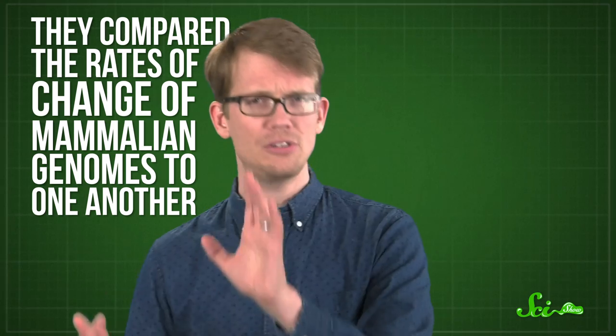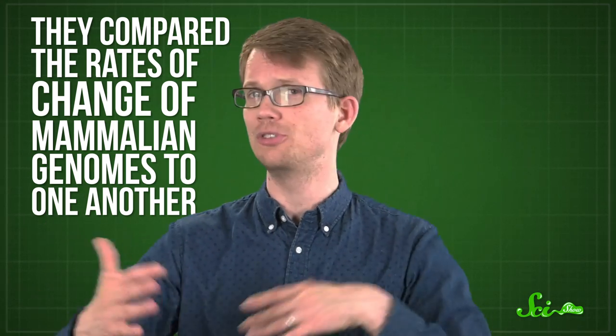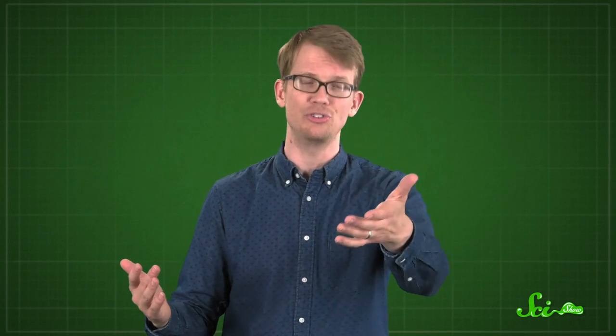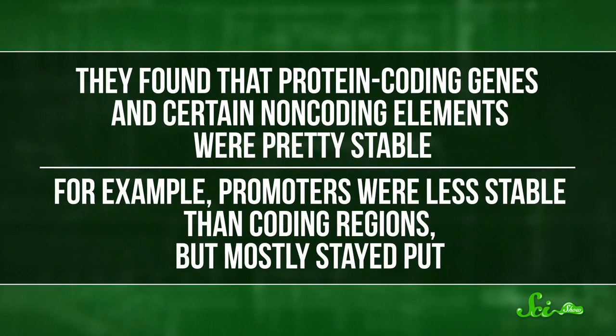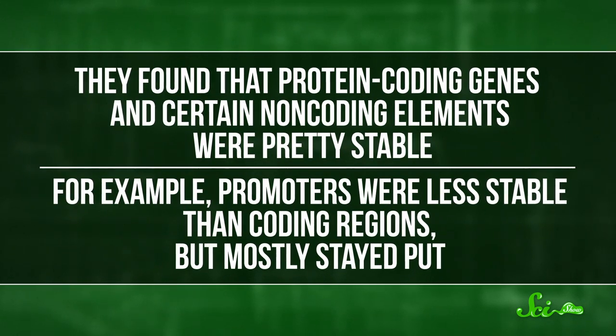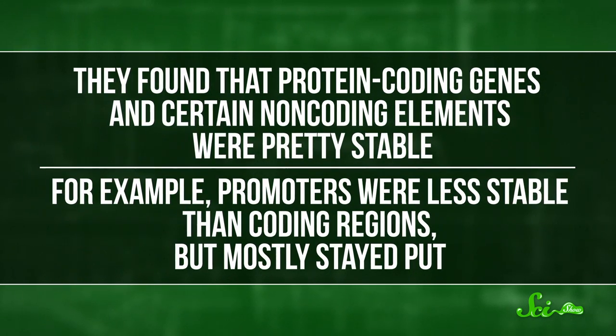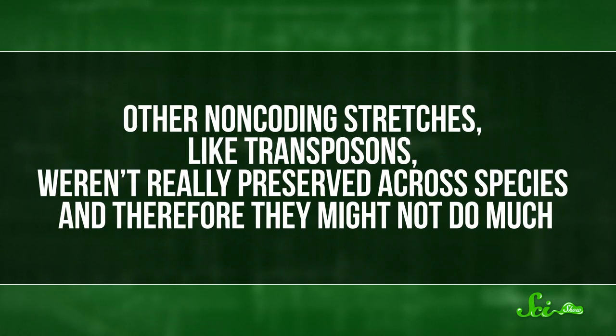An earlier paper published by UK researchers in 2014 in PLOS Genetics used a similar definition of functional. They compared the rates of change of mammalian genomes to one another. Genes come and go across evolutionary time. But by comparing related groups side by side, researchers can figure out the most important regions subject to natural selection. They found that protein-coding genes in certain non-coding elements were pretty stable. For example, promoters were less stable than coding regions, but mostly stayed put. But other non-coding stretches, like transposons, weren't really preserved across species.